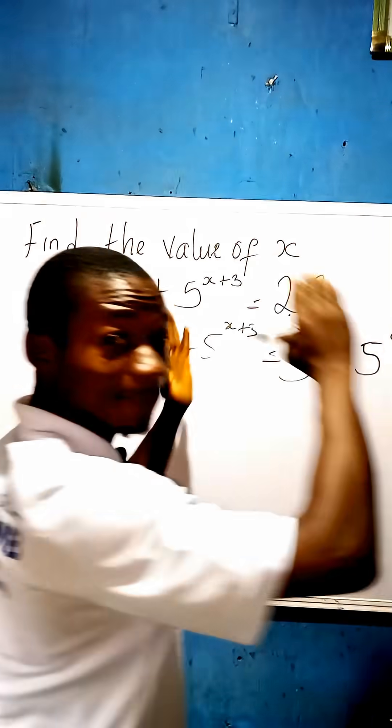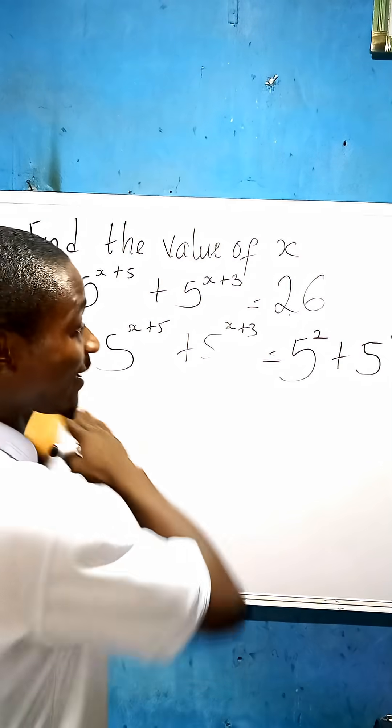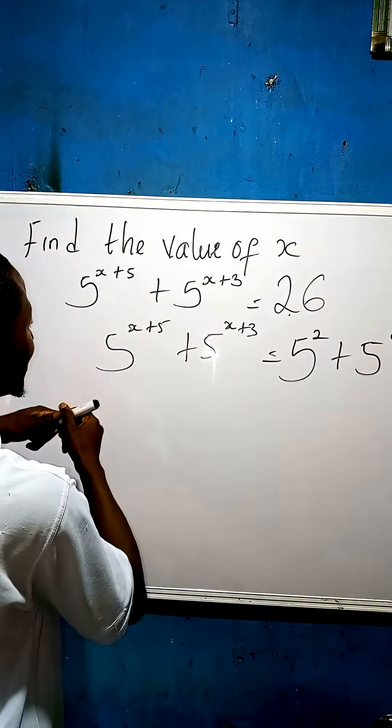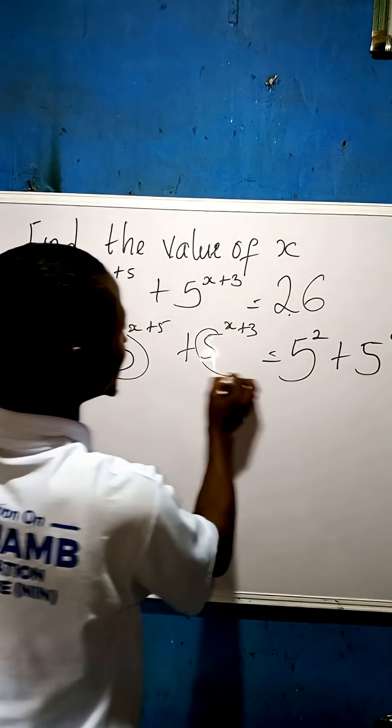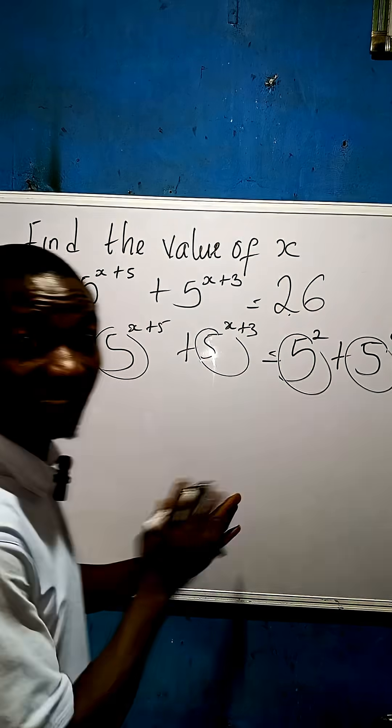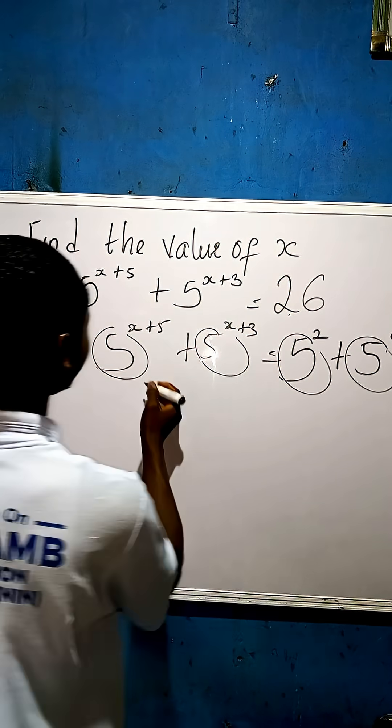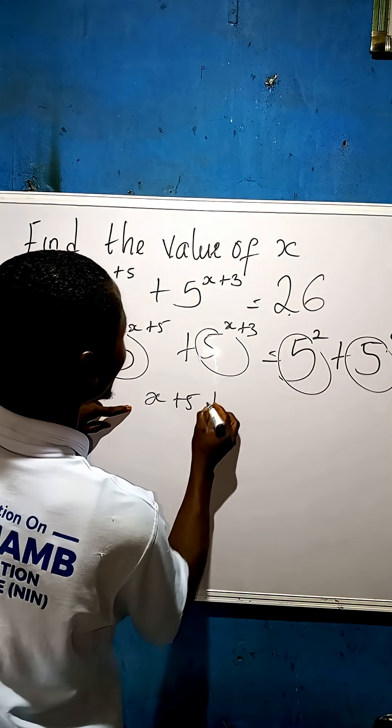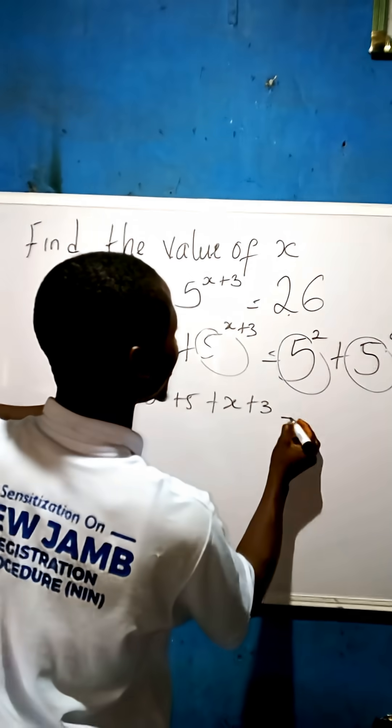So what are we going to do is to equate the powers and keep the base aside. We keep the base to one side so that we can work upon the power. Now we have the power to be: x plus 5 plus x plus 3 equal to 2 plus 0.